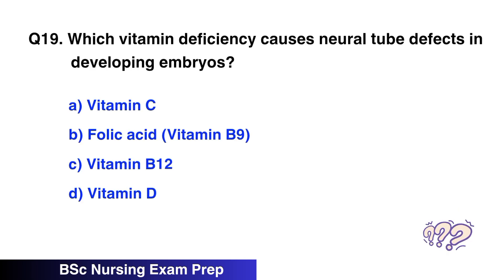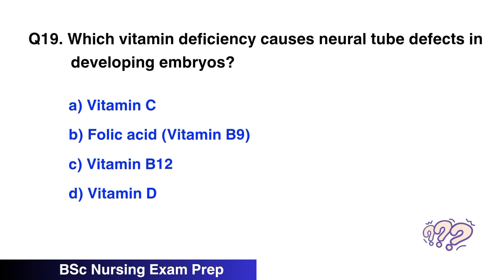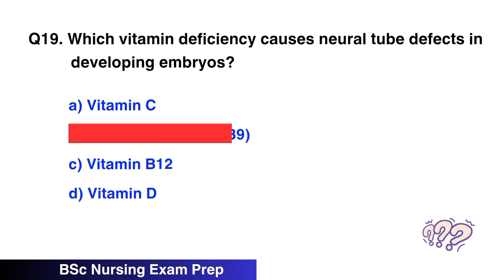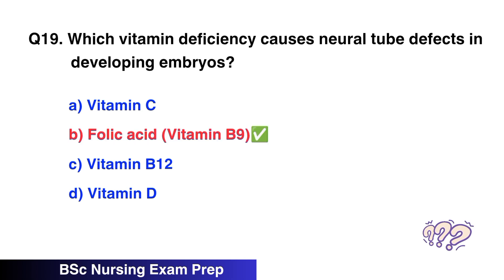Question 19. Which vitamin deficiency causes neural tube defects in developing embryos? The correct option is B, folic acid, vitamin B9.